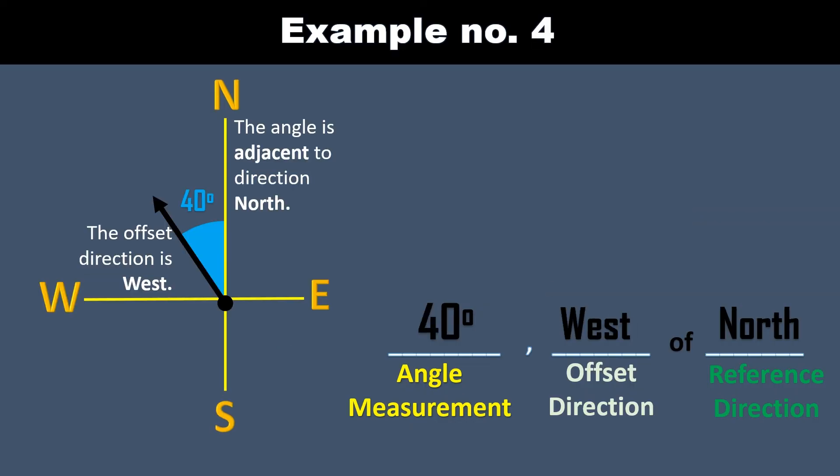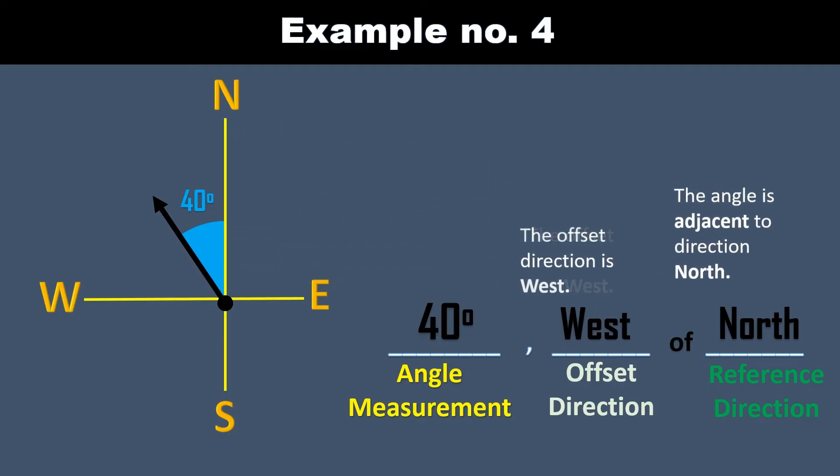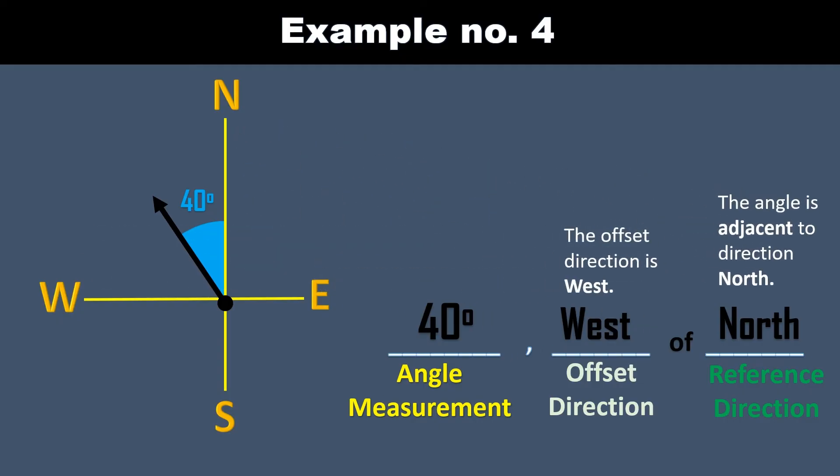Example number 4. The given angle is 40 degrees. The 40-degree angle is adjacent to the north direction, so we place the word north on the third blank for the reference direction. The angle is turning towards the other direction, which is west, so we place west on the second blank. So the angle is read as 40 degrees west of north.